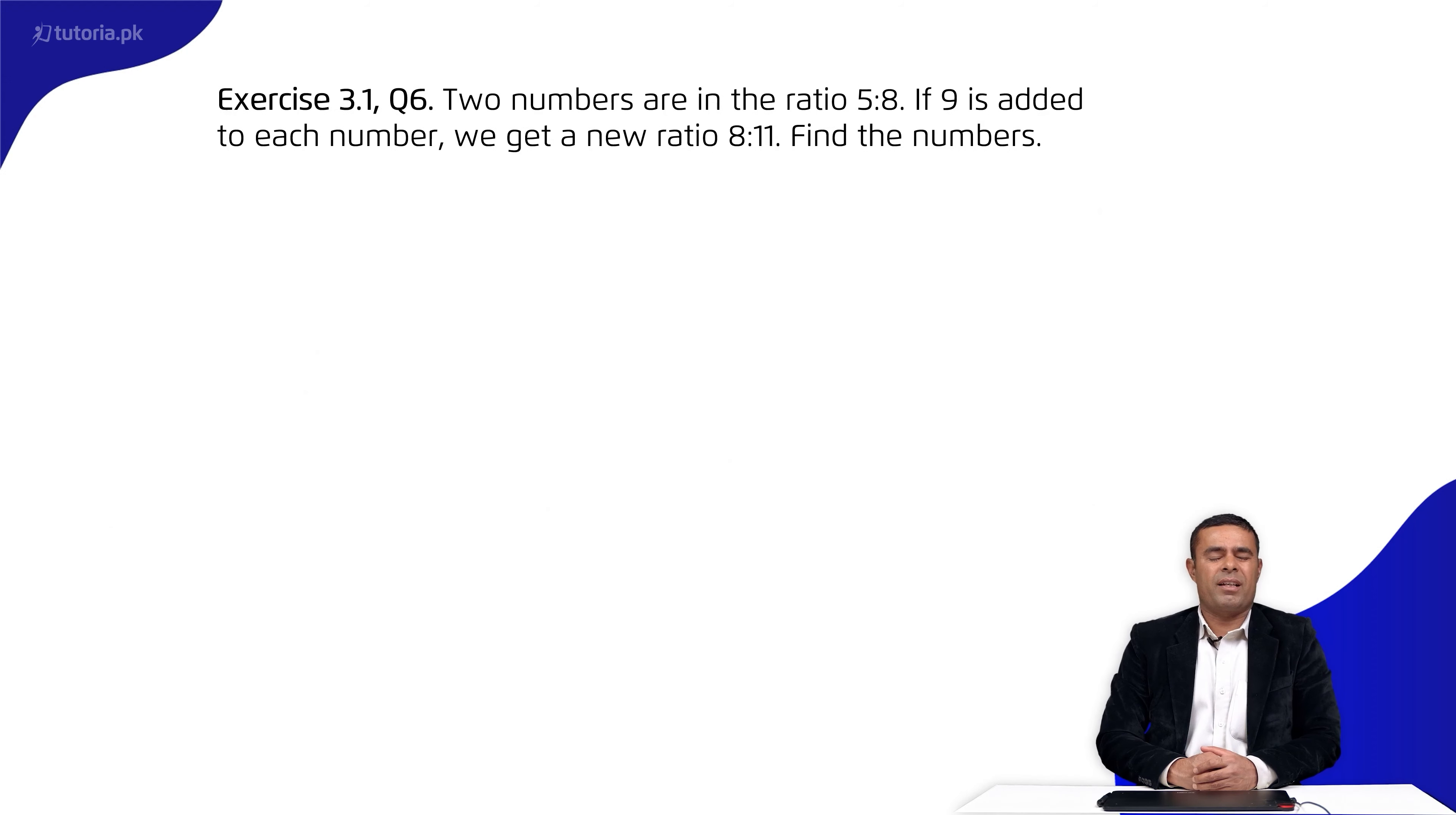Exercise 3.1, question number 6: Two numbers are in the ratio 5:8. If 9 is added to each number, we get a new ratio 8:11. Find the numbers. We have two numbers in ratio 5:8, and if we add 9 to both, the ratio becomes 8:11.